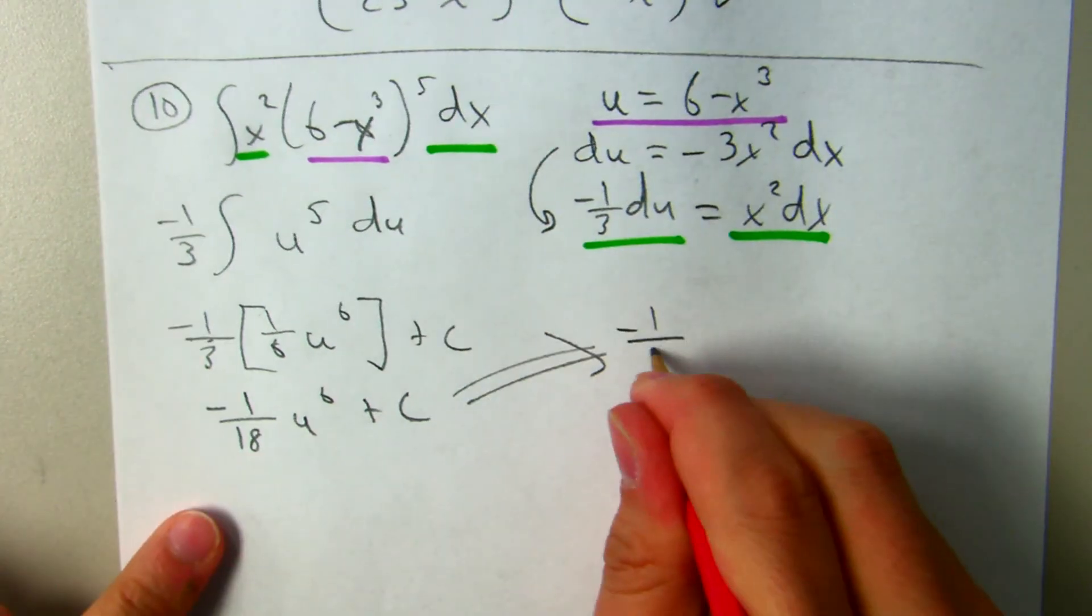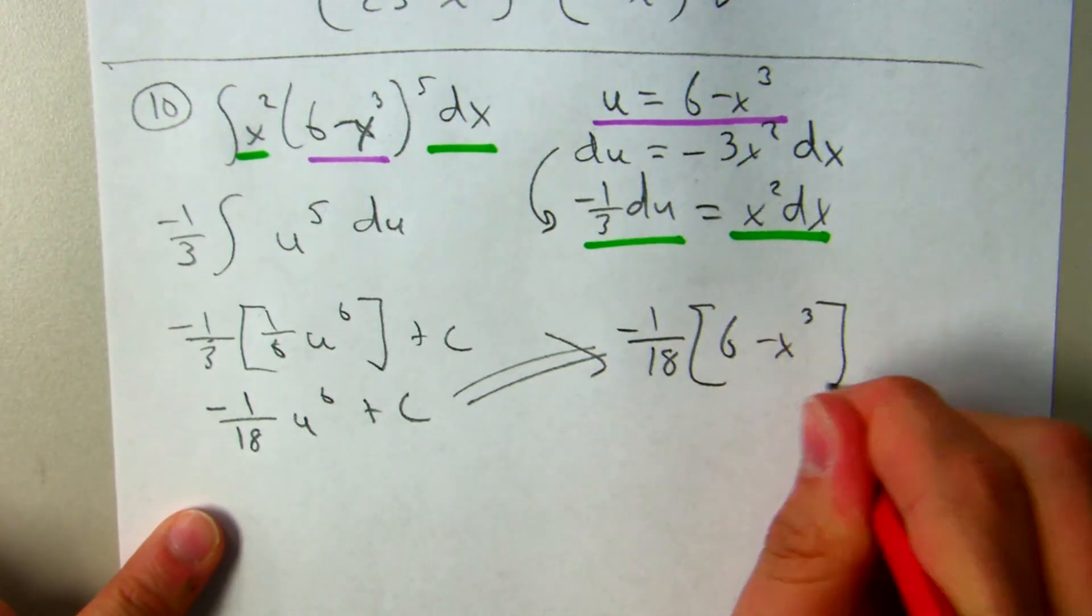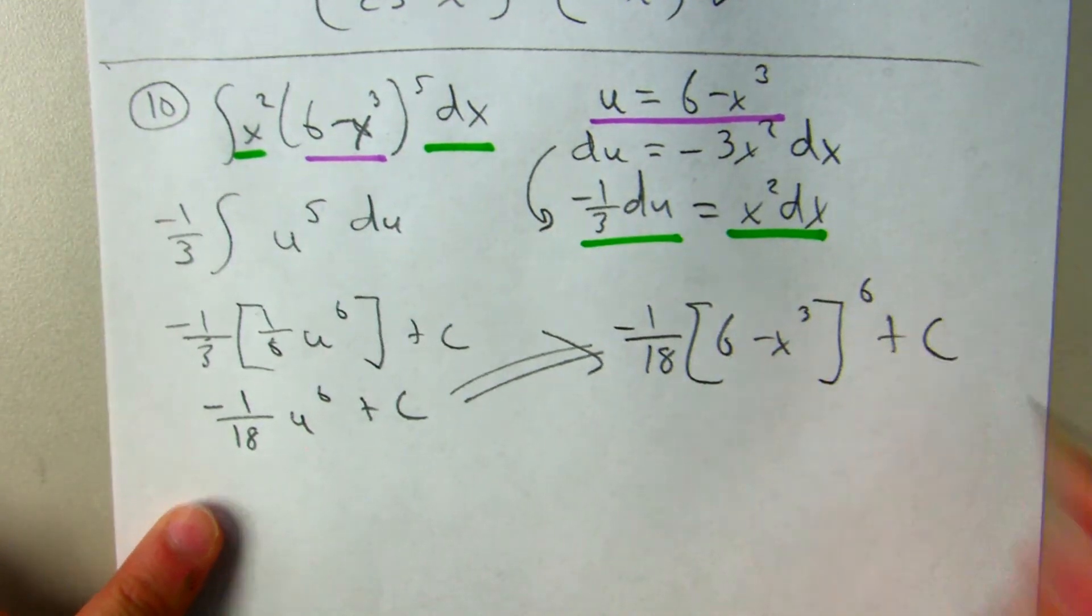So, negative 1/18, u, which is this, to the 6th, plus C.